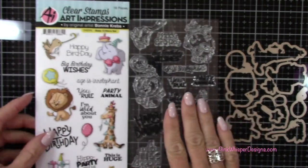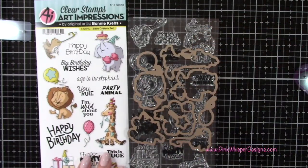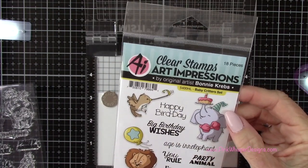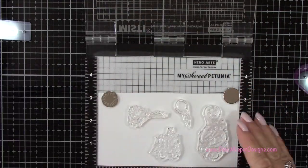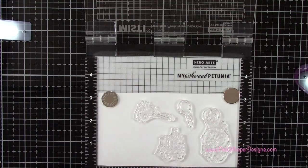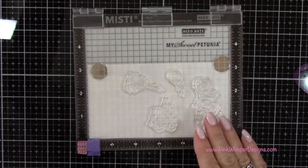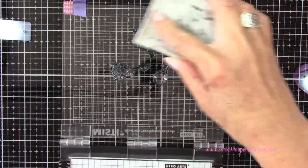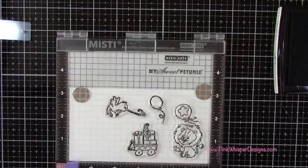And this set also has the coordinating dies as well. So now I've placed those images in my mini Misti and I did decide to grab that little bird as well. So I'm going to go ahead and stamp these. And I'm using my VersaFine Onyx black ink to do my stamping. This is a permanent black ink. And I will stamp these a couple of times.